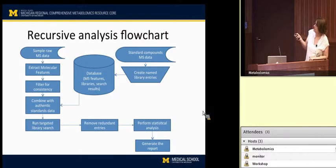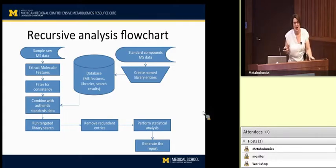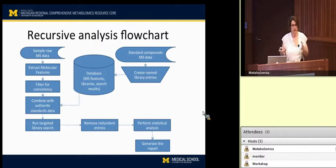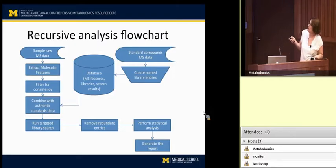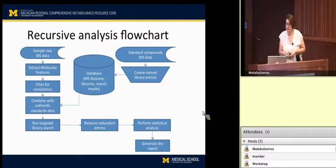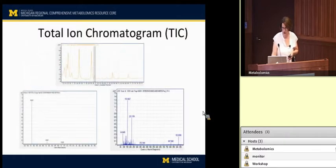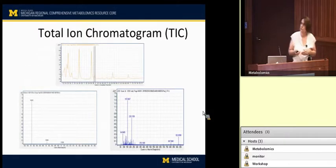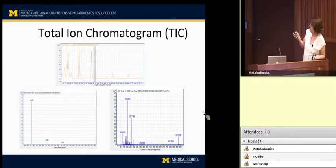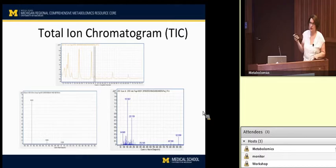A feature can have more than one peak in it — it could include the isotopes associated with that ion. We've shown a few total ion chromatograms now. This is all the signal coming into the detector of the mass spectrometer at any given time.